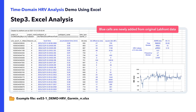So as you can see here, in the final two blue columns, we have our BBI difference column calculated by subtracting one cell value from the previous cell above it, and we have our squared column, where each value is squared from the previous column.